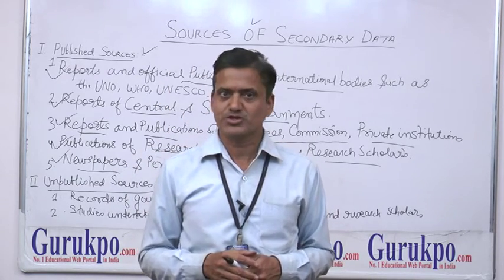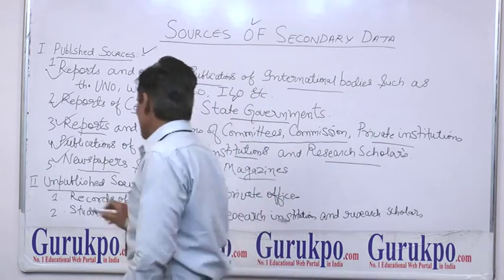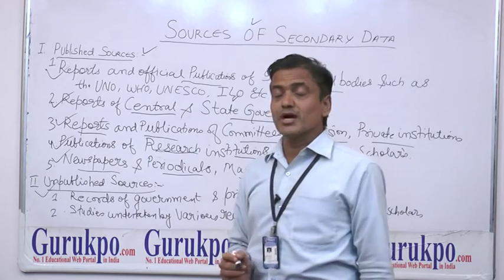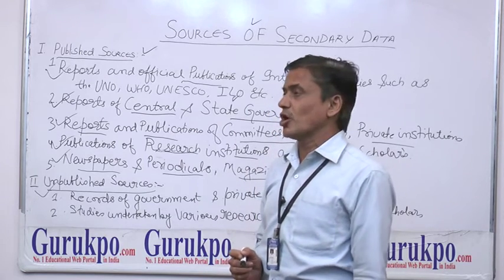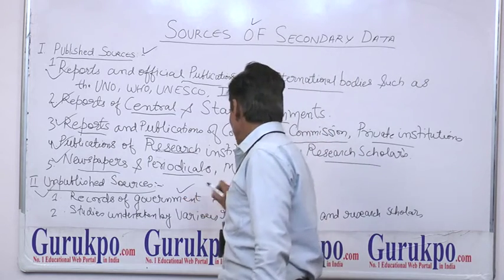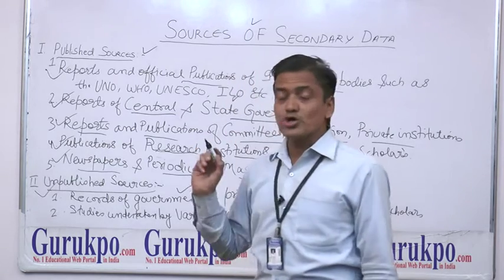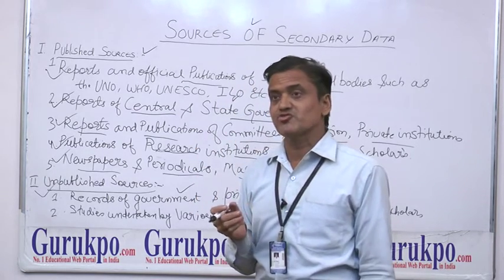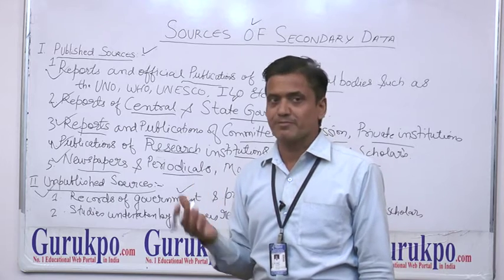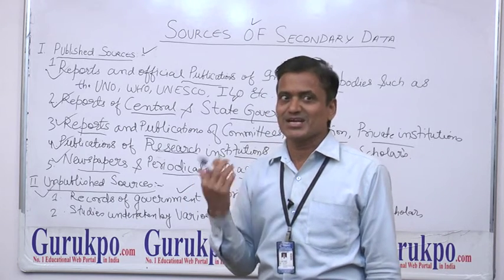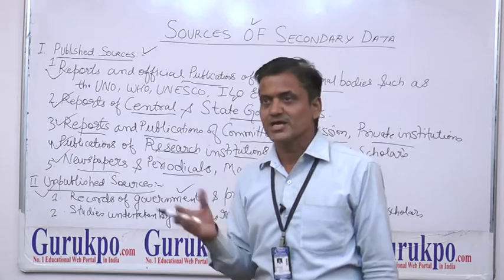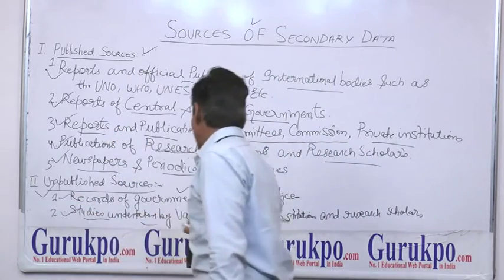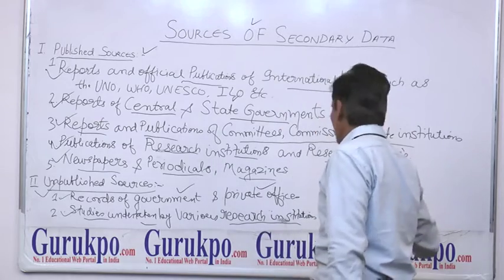Moving to unpublished sources of data: government offices and private institutions maintain records that can be used as secondary data to get information about those organizations. Another unpublished source includes studies undertaken by research institutions and research scholars.